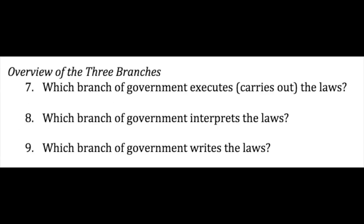Question number seven asks which verb matches each branch. For number seven, the executive branch — execute, or carries out. Number eight — interprets; that's the judicial branch, they judge the law, adjudicate. And number nine — writes the laws, or legislates; that's the legislative branch. So look at those verbs: execute, interpret, write, carry out, judge, legislate.